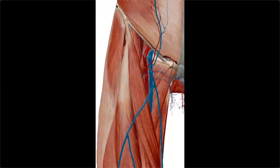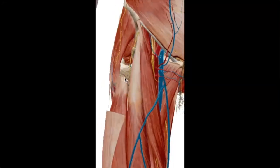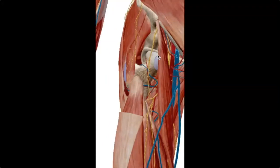Starting at the ASIS, you see the iliac crest, which is the origin of the tensor fasciae latae, and the sartorius, which originates from the ASIS. The sartorius is innervated by the femoral nerve and the tensor fasciae latae is innervated by the superior gluteal nerve. Note the position of the lateral femoral cutaneous nerve, normally 1 cm medial to the ASIS, which can run anterior, through, or posterior to the sartorius origin. The rectus femoris is deep in this exposure and is also innervated by the femoral nerve. We can see the acetabulum and femoral head, which is the exposure used for a hip replacement.